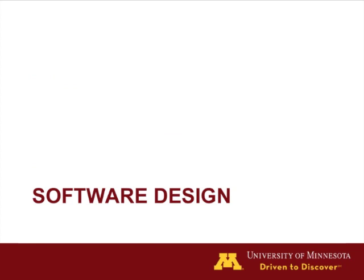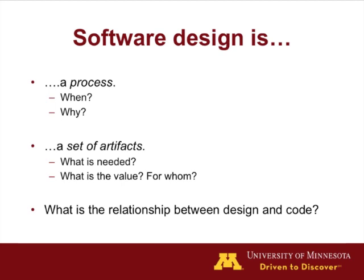With that as a background for why we would want to do software design, let's talk through software design as a discipline and the steps involved. Software design is a process typically undertaken early in the software development lifecycle, though occasionally undertaken later when we realize we have a bad design that needs improvement. The design itself takes the form of a set of artifacts. In the object-oriented world, the most common artifact is a UML class diagram that represents the system — either that's been built or the system to be built.